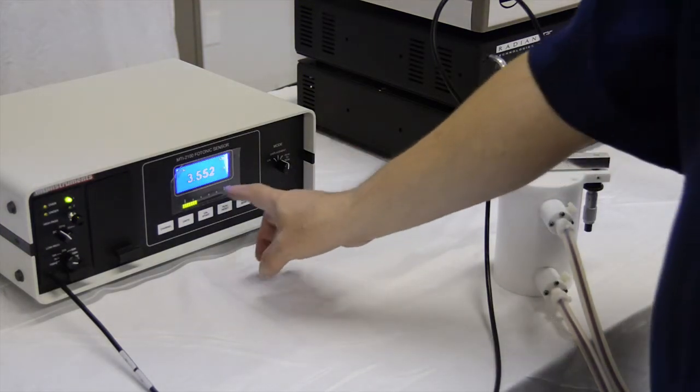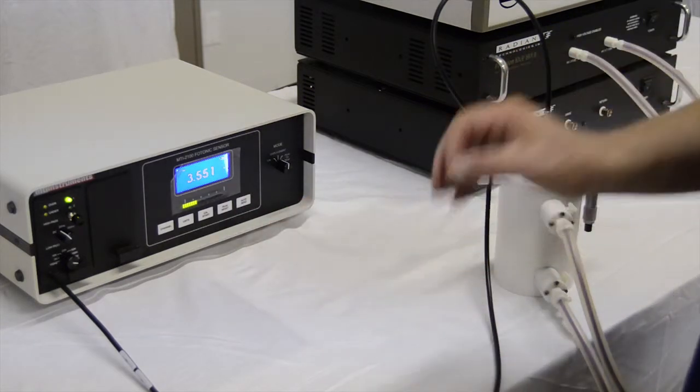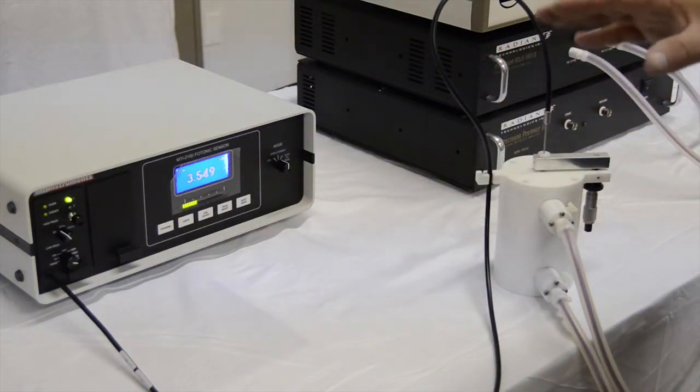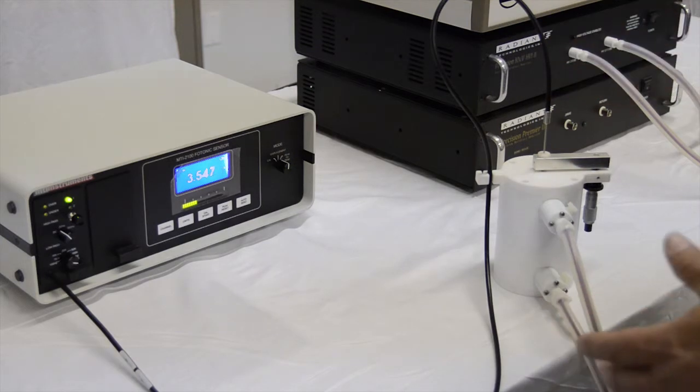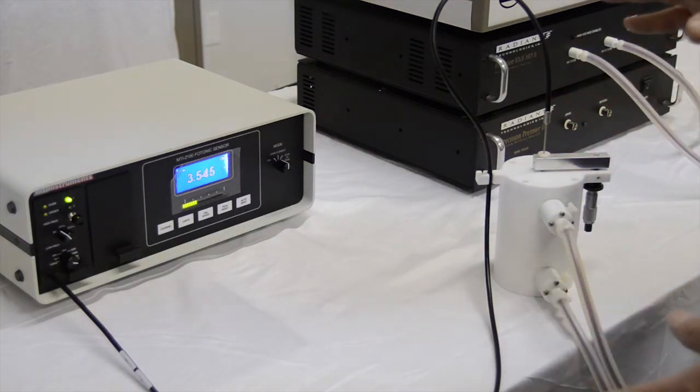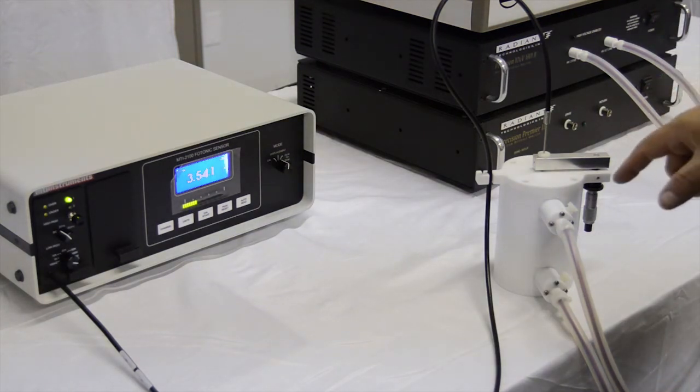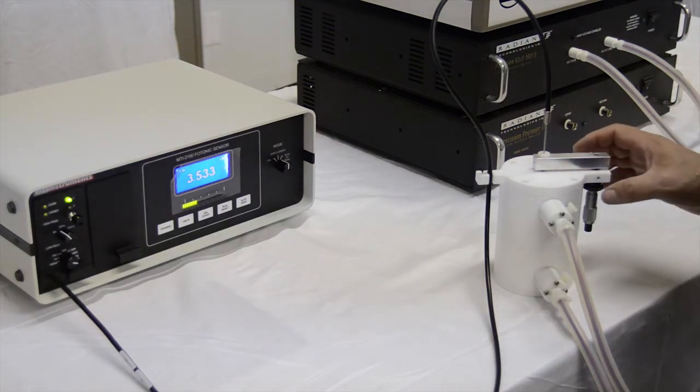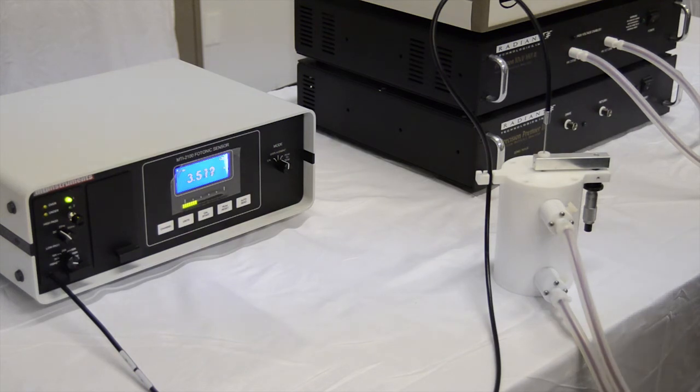And the MTI manual will actually tell you to take it to zero volts. But we're actually interested in having some voltage overhead in both directions from the center voltage, because we're going to be applying a bipolar voltage waveform to the sample, and it's going to displace in both directions. So we want to be able to detect displacement in both directions. Once I'm at the set point, I lock the lock ring, and I'm ready to make my measurement.